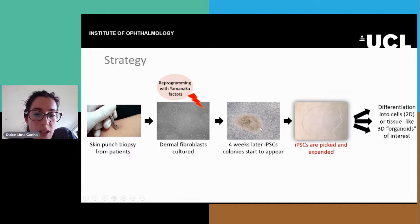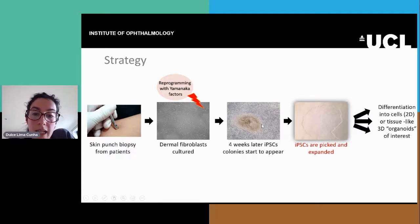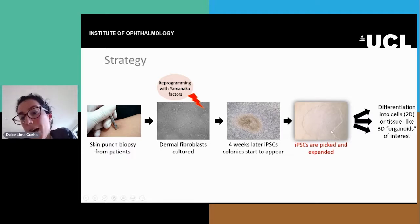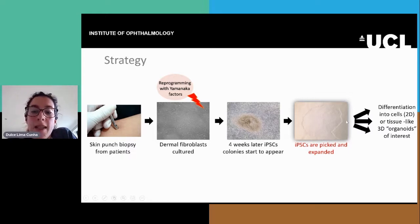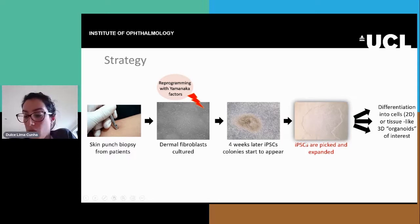we start to see these really compact colonies appearing, which we then pick and expand until they look really flat and even. Once these cells are ready, we can differentiate them into both 2D or 3D formats.